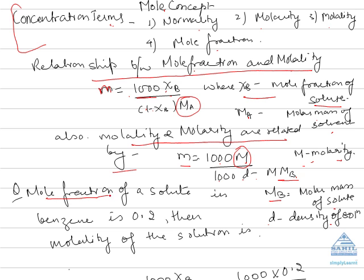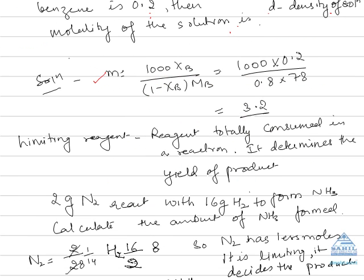Now let's take an example. If the mole fraction of the solute in benzene is 0.2, then what is the molality of the solution? Mole fraction is given and they asked for molality. We can use the direct relation; otherwise we have to go by the long procedure like first finding the number of moles, then finding the mass of solvent in kg.